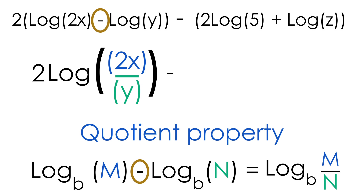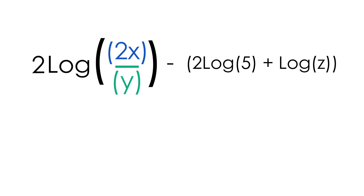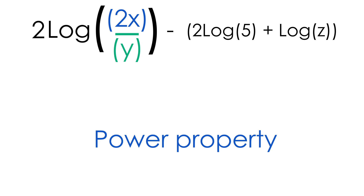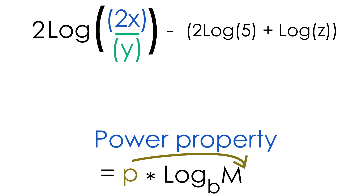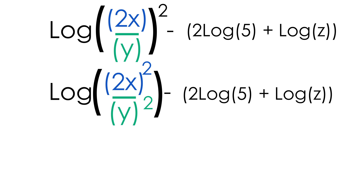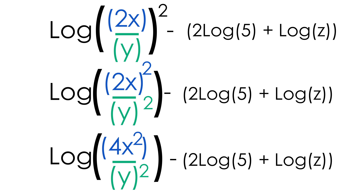We can't forget that this 2 is still being multiplied in the front. Now we can use the power property, which says that a constant multiplied in front of the log can be moved and rewritten as an exponent. So the 2 in front becomes an exponent on (2x/y), giving us log((2x/y)²). Applying the exponent to numerator and denominator gives us (2x)² over y², which simplifies to log(4x²/y²).